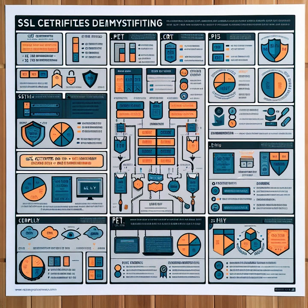First up, we have the PEM files. These widely used files store SSL certificates, private keys, and intermediate certificates. PEM files are ASCII text files that contain encoded data. They are commonly used in Unix-based systems, such as Linux.